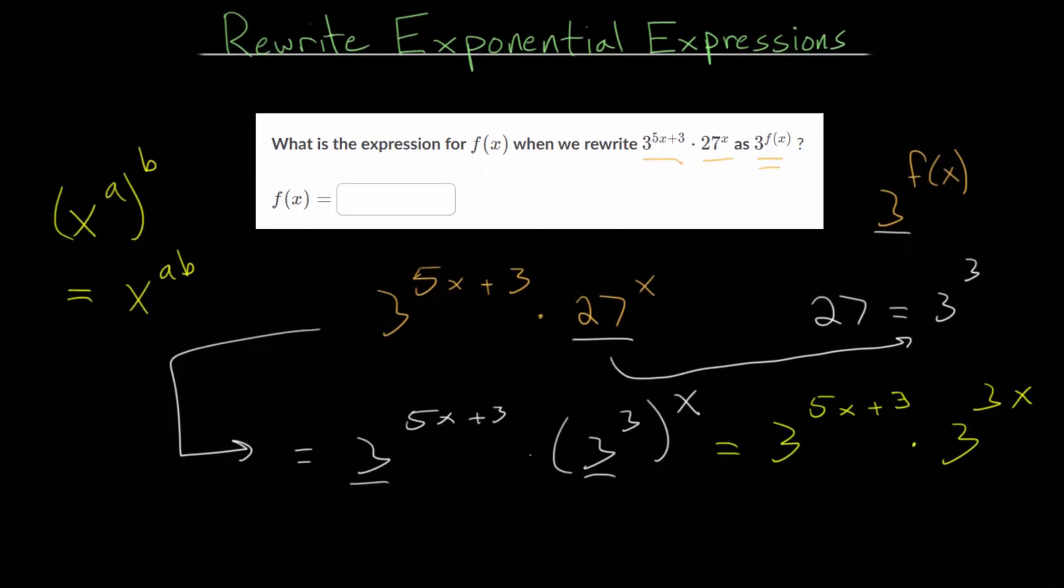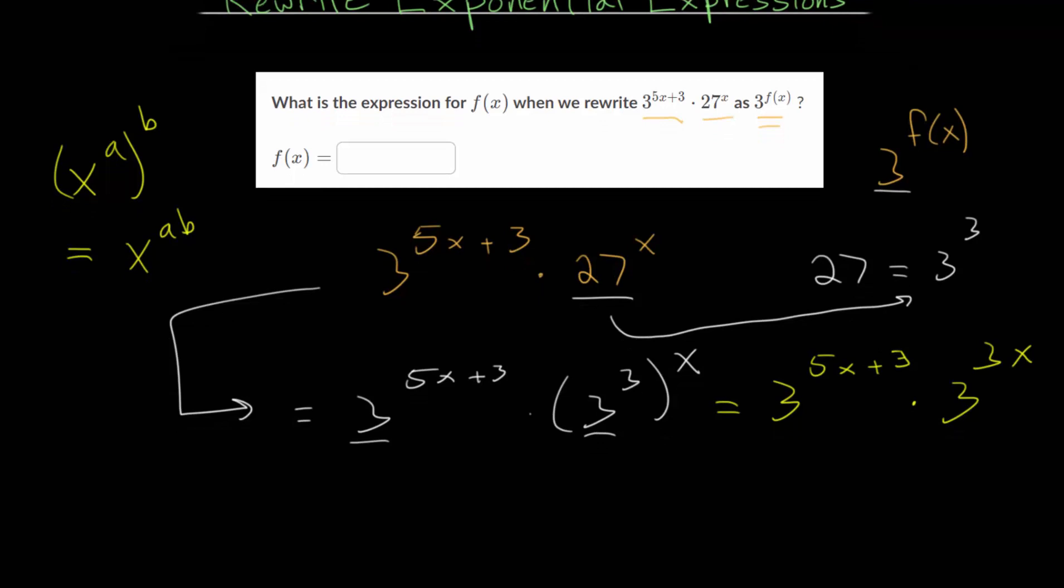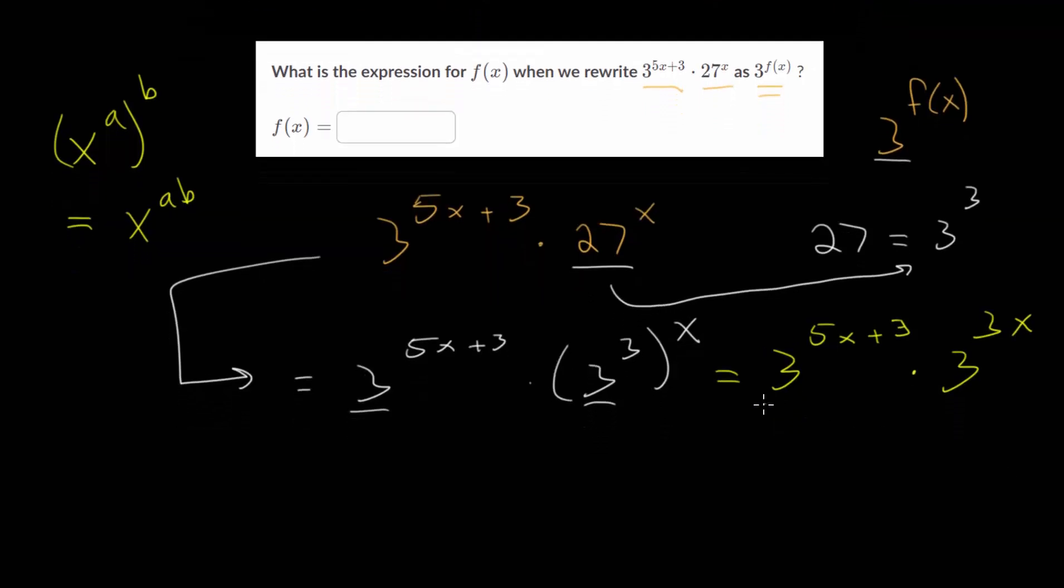And, from here, now that we have these two exponential expressions, and they have the same base, we can just add the exponents. Since, remember, our other exponent rule that we can use here. If we have a to the x multiplied by a to the y, and these are different x and a values compared to this first rule, then, if they have the same base, we just add the exponents. This is just equal to a to the x plus y.